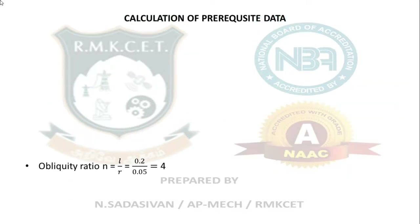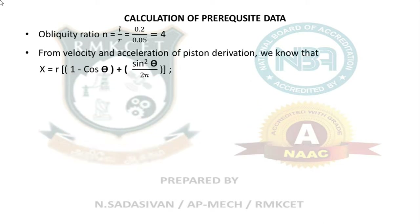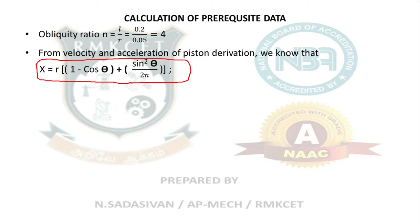First, calculate prerequisite data. Obliquity ratio N equals L divided by R, which is 200 mm divided by 50 mm, giving N equals 4. The displacement expression from the derivation is: x equals R times (1 minus cos θ plus sin²θ divided by 2N). I know x equals 10 mm and want to find theta. Substitute directly in millimeters for consistency.